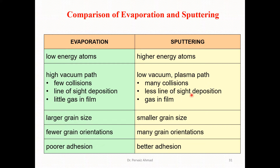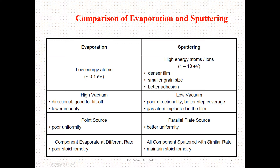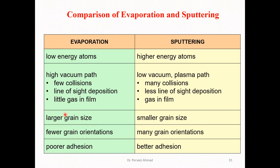In evaporation we have a larger grain size compared to sputtering, where we have a smaller grain size. Evaporation has fewer grain orientations, whereas sputtering has many grain orientations. Similarly, evaporation has poor adhesion, while sputtering has better adhesion compared to evaporation.